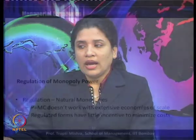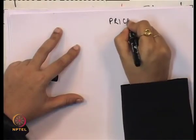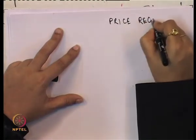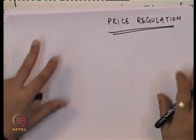Natural monopoly is a market with more economies of scale, which creates a barrier for other firms to enter. When it comes to regulation, regulated firms still have very little incentive to minimize cost. But if there is incentive to minimize cost, at least some amount of output can be controlled when it comes to regulation.